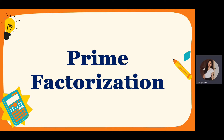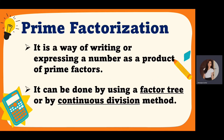Right, class. So today we are going to discuss a new lesson, but this is related to our lesson last time, which is prime numbers. Prime factorization. So what is prime factorization? It is a way of writing or expressing a number as a product of prime factors. So it can be done by using a factor tree or by continuous division. So all composite numbers, we can get their prime factorization.